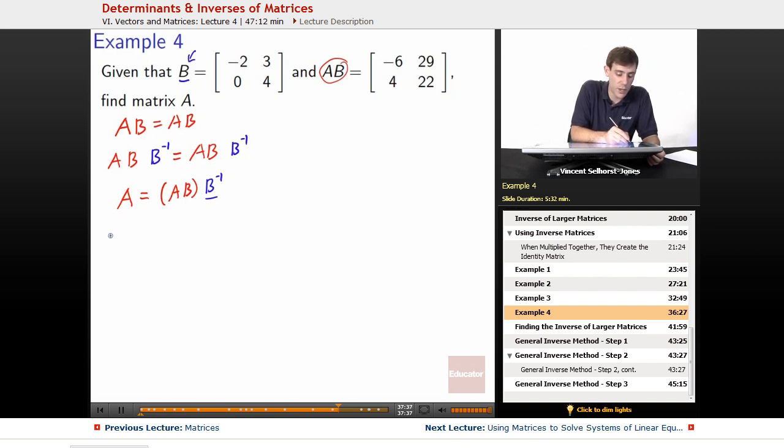So if B equals [-2, 3; 0, 4], then B inverse equals 1 over the determinant, which is AD minus BC. So -2 times 4 minus 0 times 3, so that's -8 times. We flip the location of the main diagonal, and then we put negatives on the other ones, -3 and -0. We can write as just 0. Simplify that just a little bit to -1/8 times [4, -3; 0, -2]. Great.